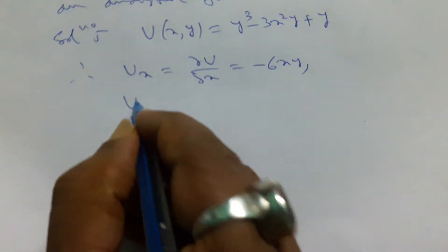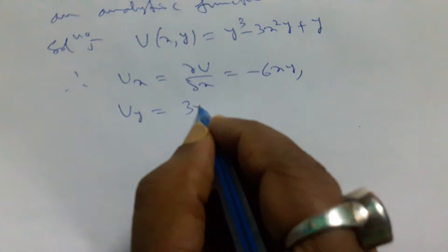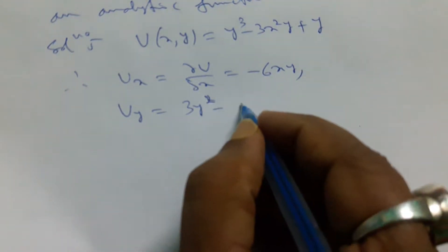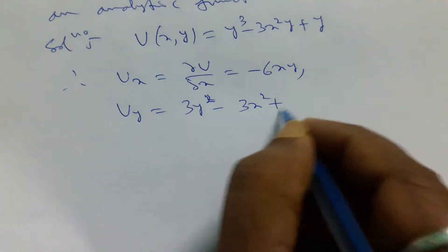Now uy is equal to 3y square minus 3x square plus 1.